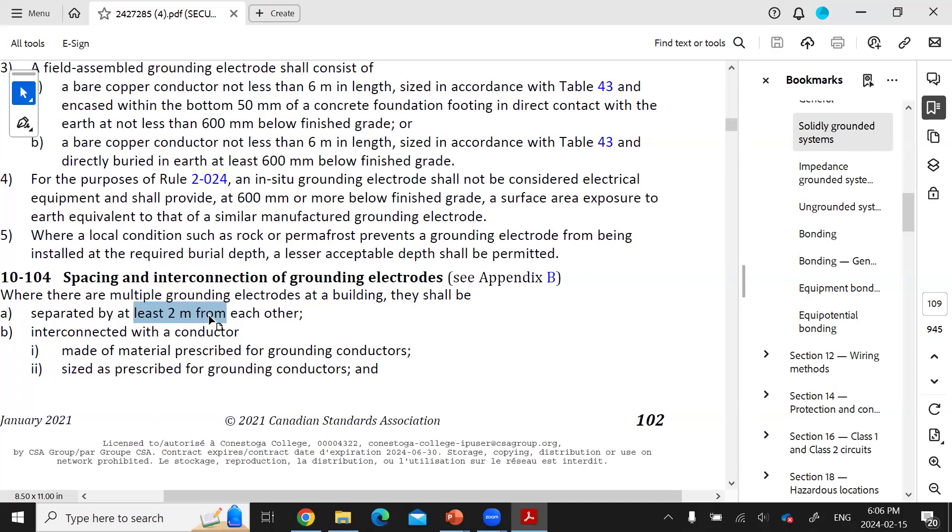Since a fault can occur between one of these grounding systems and the building electrical wiring systems, then the grounding electrodes of the two systems must be interconnected to prevent grounding loops and circular currents from occurring between these different grounding and bonding systems.